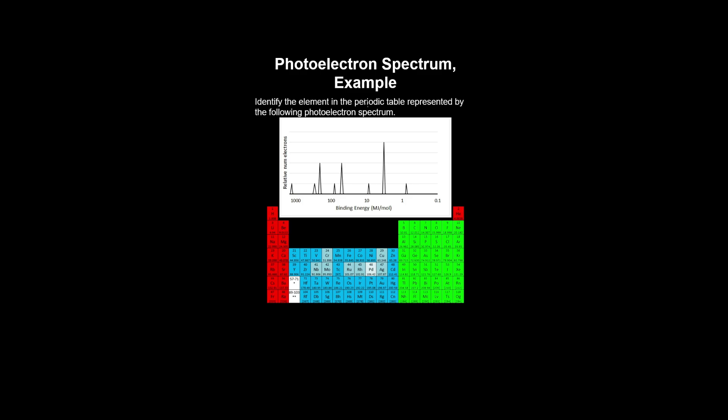Let's identify the element in the periodic table represented by the following photoelectron spectrum. We can work our way through the periodic table in order of energy levels, from the subshells closest to the nucleus to the valence shell.